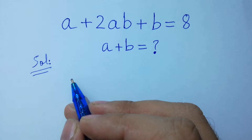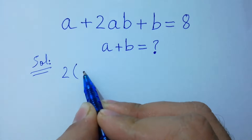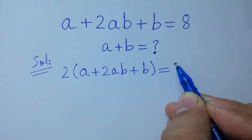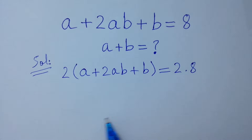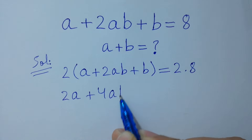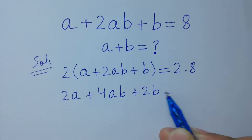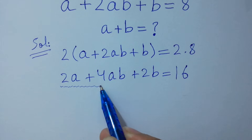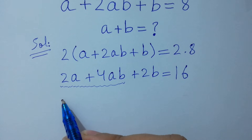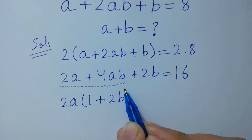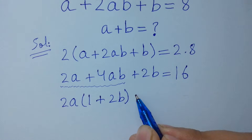To solve this, first of all multiply by 2 on both sides: 2a plus 2 times 2ab plus 2b is equal to 2 times 8, which gives us 2a plus 4ab plus 2b equals 16. We can factor out 2a to get 2a times 1 plus 2b, and then plus 2b equals 16.